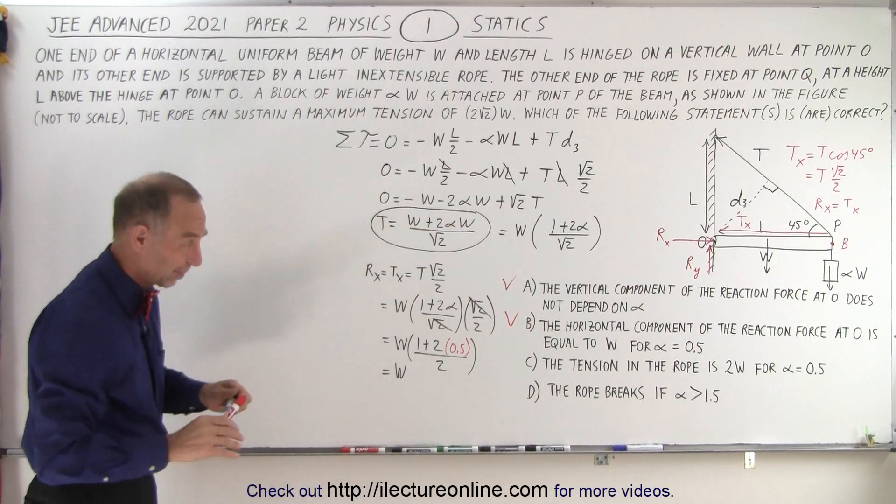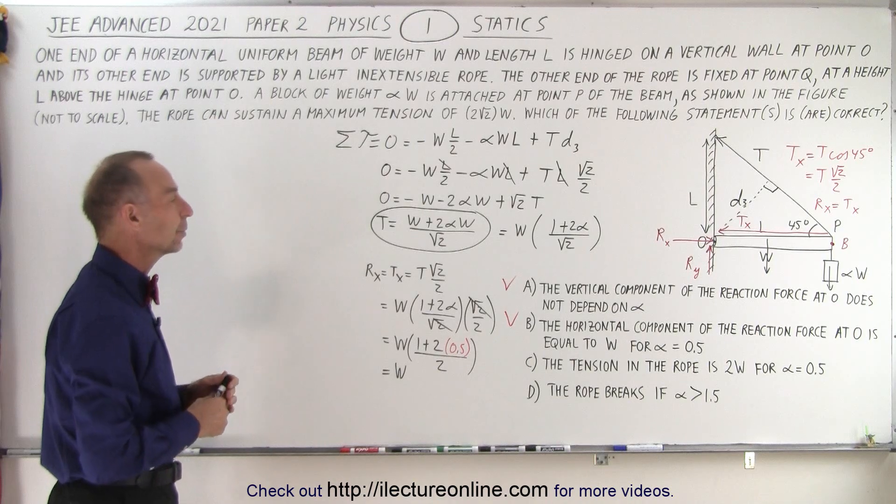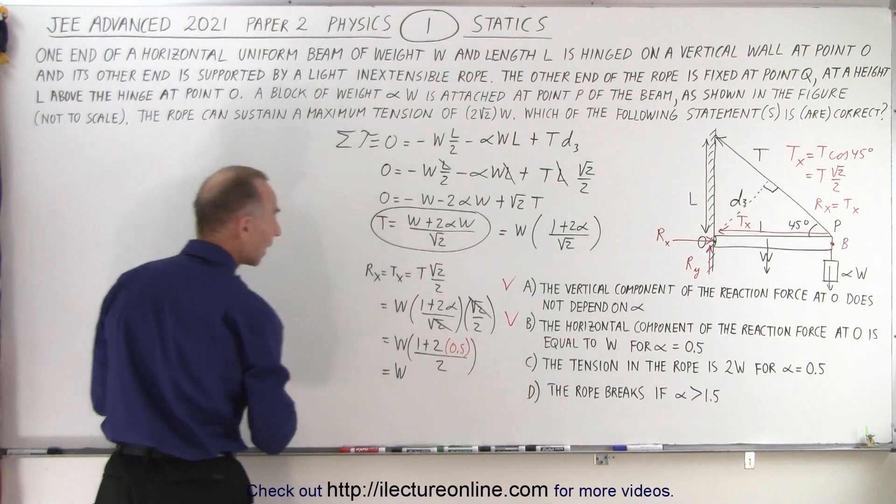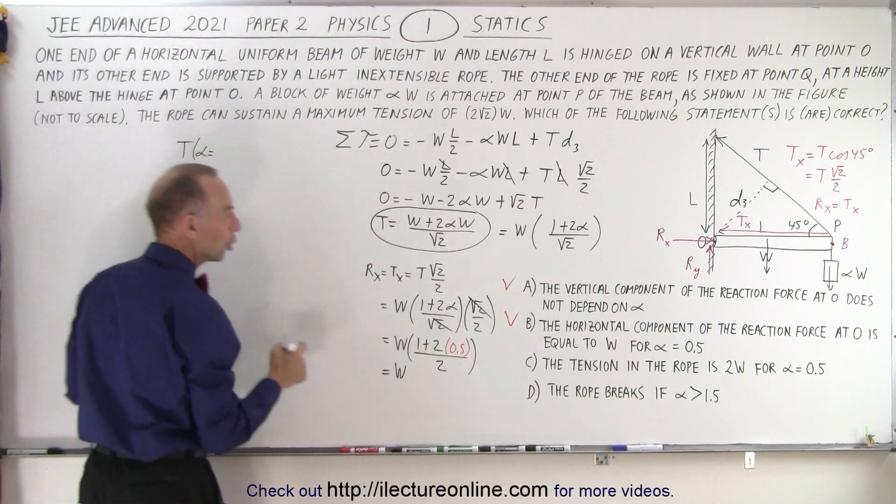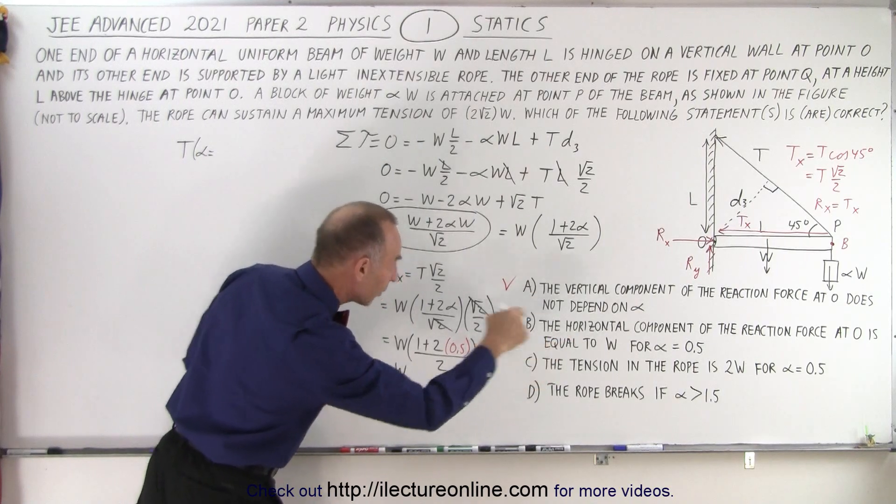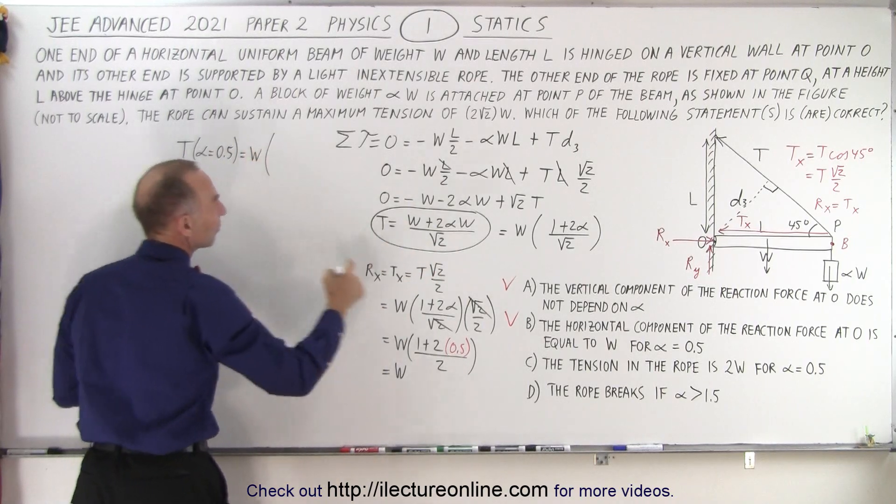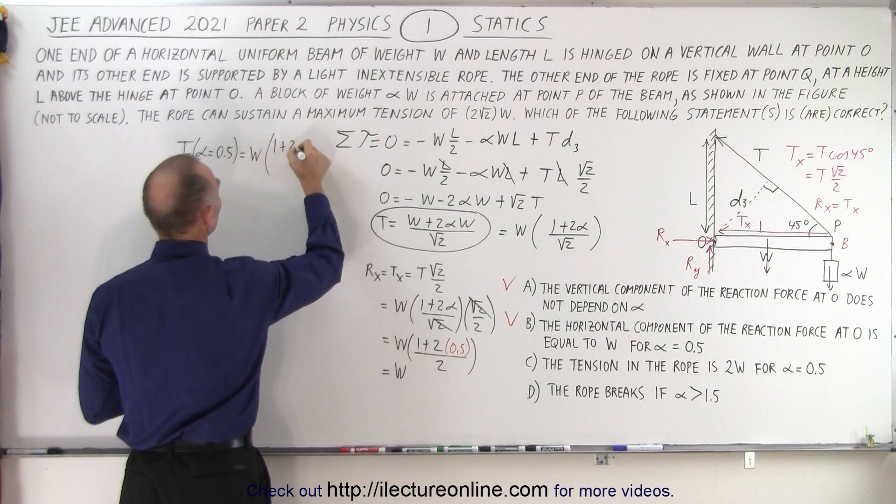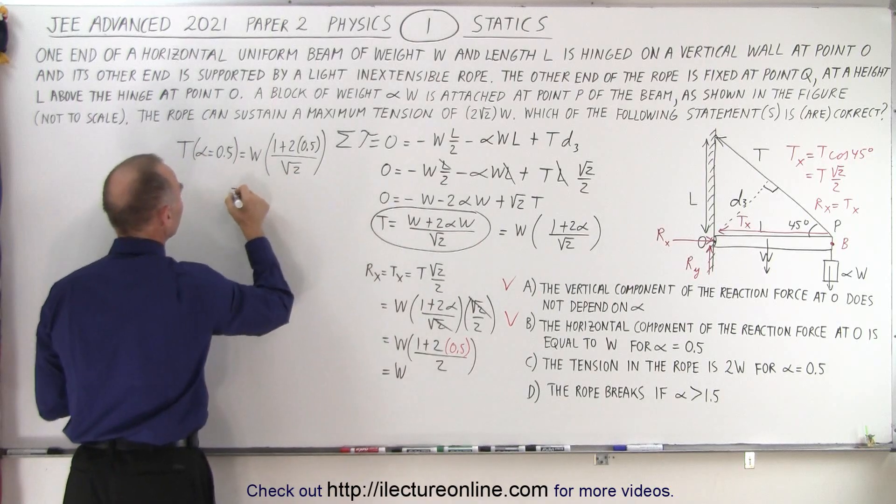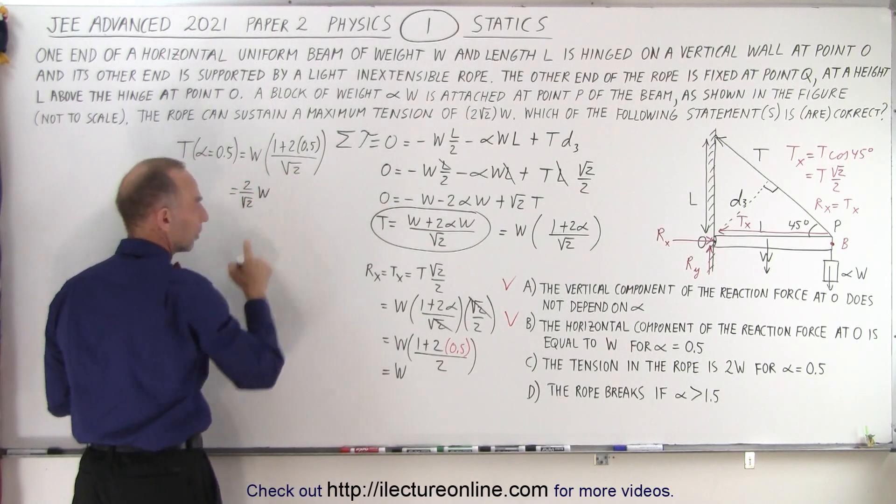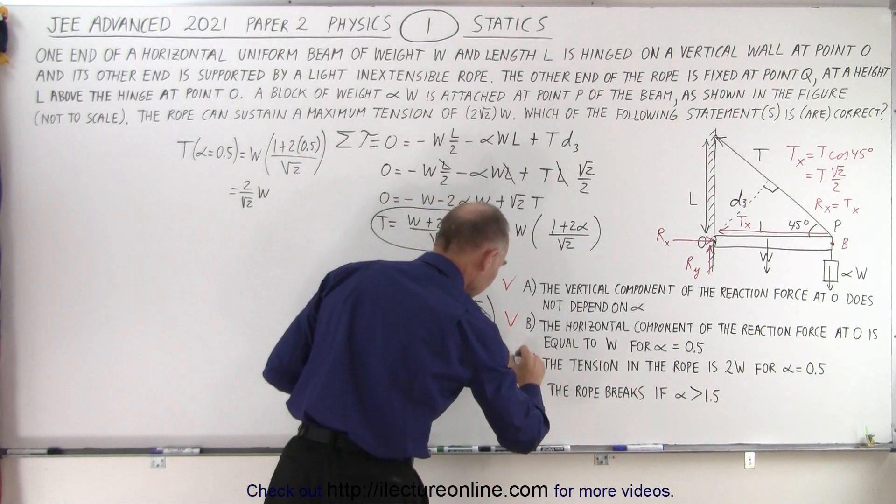Notice you only have three minutes to do this. You have to go quickly. So now the tension in the rope is 2W for alpha equals 0.5. Let's go back to this format. The tension when alpha is equal to 0.5 is equal to W times 1 plus 2 alpha, 1 plus 2 times 0.5, divided by the square root of 2. So that will be 2 divided by the square root of 2W. You can see that is not equal to 2W. Therefore, C is not a correct answer.